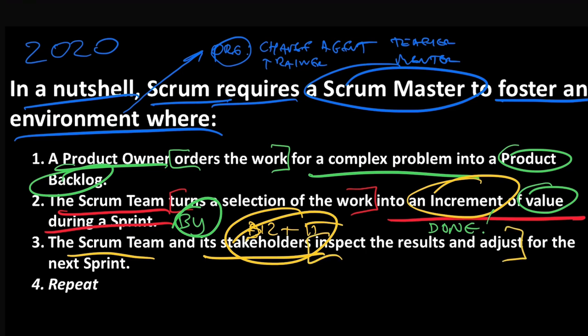They're going to check the work, make sure it was valuable. We're checking that value promise. This is the org — everyone coming together to inspect for value. And we're going to adapt what we're doing. That adaptation is going to occur in the product backlog. We're closing that feedback loop.